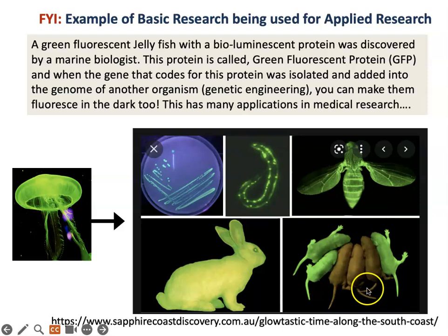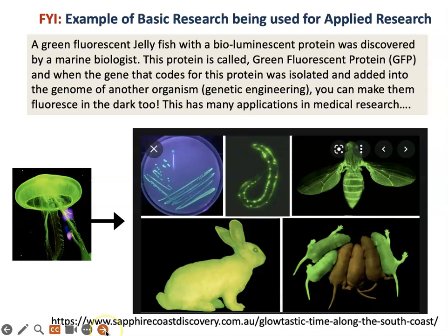This is a bunny whose keratin protein in the skin and hair is attached to GFP. Same with these mice. Look at the brown mice — they don't have GFP. You could make a glow-in-the-dark human too, though that's not ethical. If you want to see further, you can copy this link and check it out.